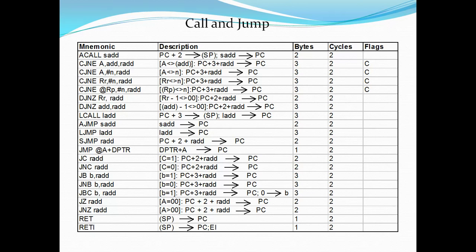The same thing we do in C language — if you want to execute those lines, you give a function name and call it in the main program. In assembly language, the call instruction is used to execute those subroutines. Always the call instruction is followed by your label name. The compiler searches for where this label is present in the program.